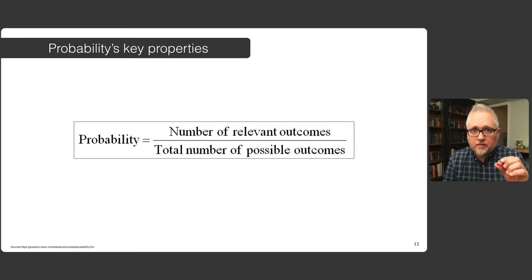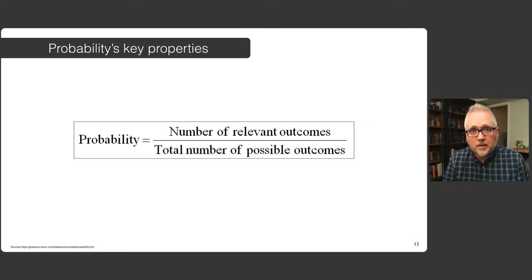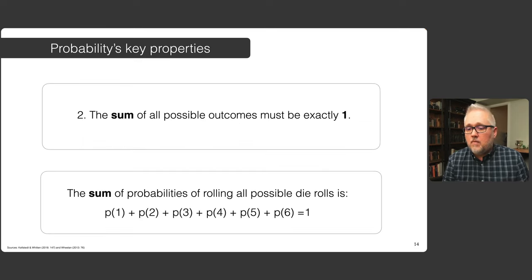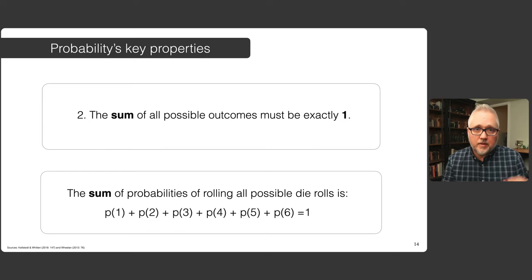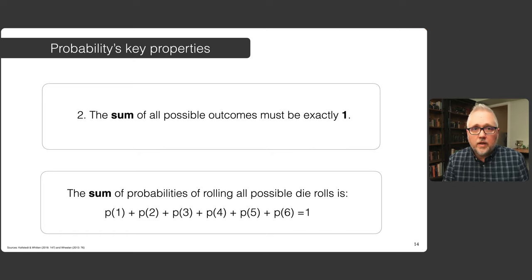For each of these different values, the basic probability of getting one of those values is the number of relevant outcomes — in this case one in six. All these different probabilities have to sum to one. The probabilities of each outcome are between zero and one. If you sum them all together, they must be exactly one. So if you sum the probabilities of all these different sides of the die, you will get one.